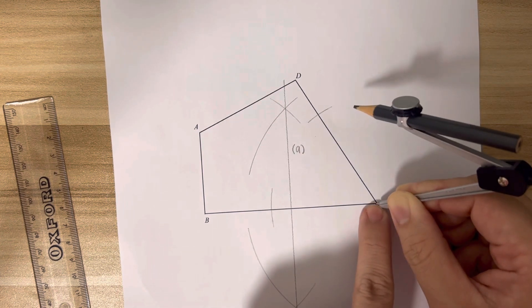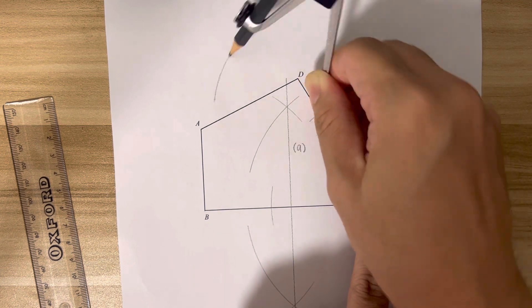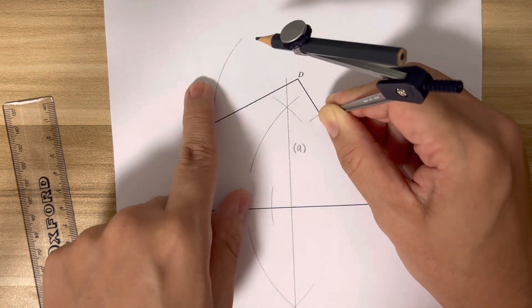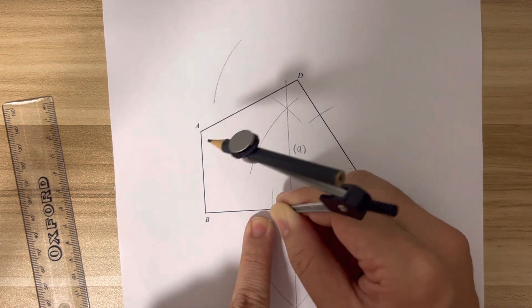Now place the pointer tip to the intersection, draw an arc here. Now move the pointer tip to the other intersection.